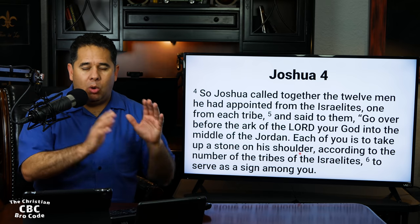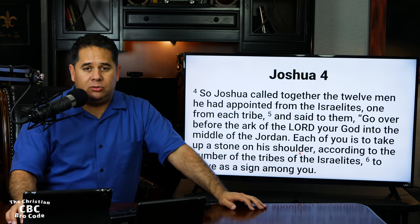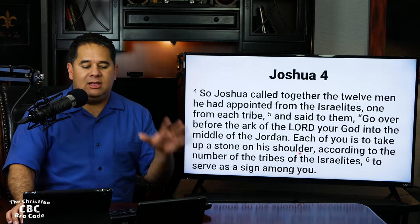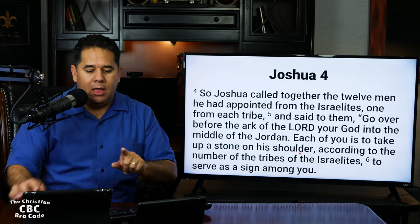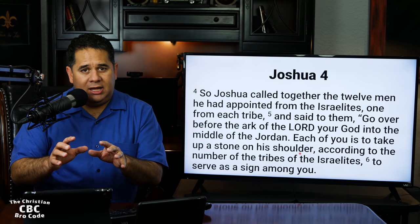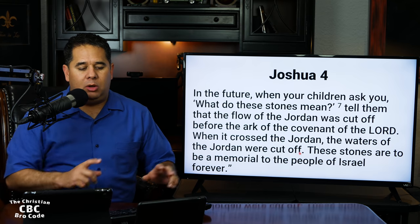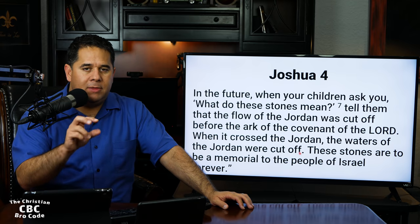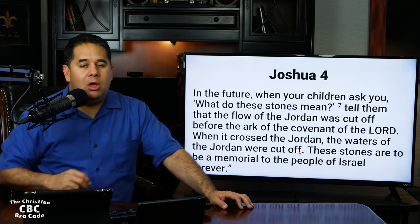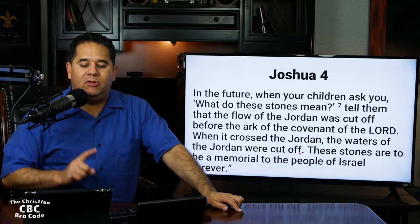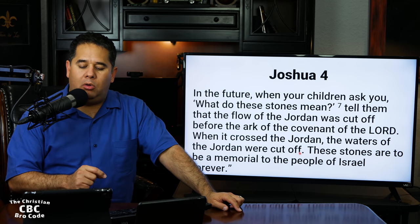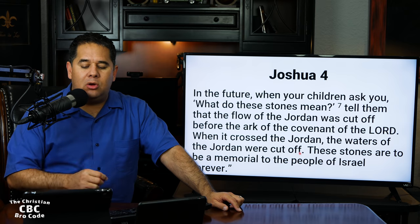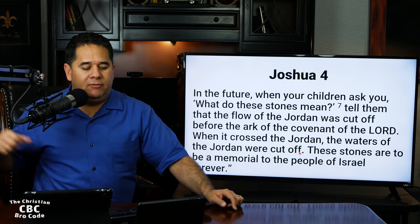You've got 12 men, one representing each of the tribes of Israel. Notice right there at the very end, this was to serve as a sign among you. And in verse 6 we discover exactly what that sign is for: 'In the future, when your children ask you, what do these stones mean? Tell them that the flow of the Jordan was cut off before the Ark of the Covenant of the Lord. When it crossed the Jordan, the waters of the Jordan were cut off. These stones are to be a memorial to the people of Israel forever.'